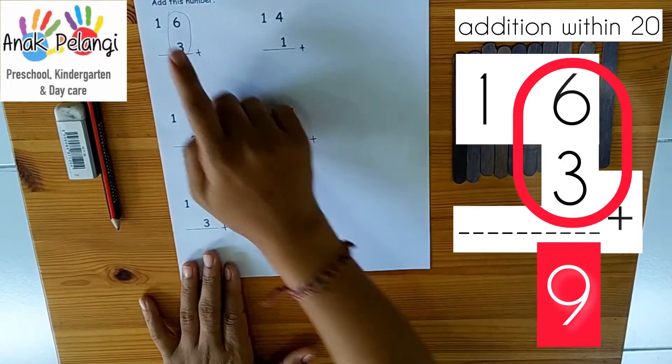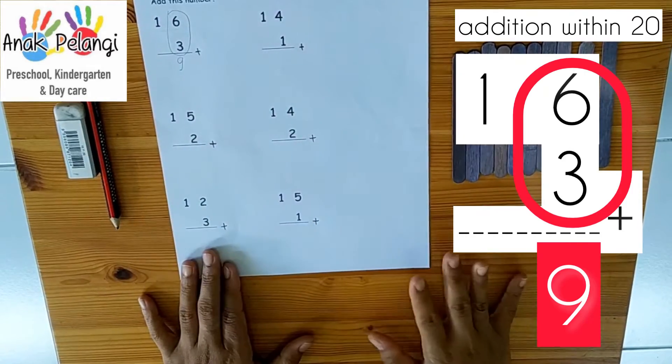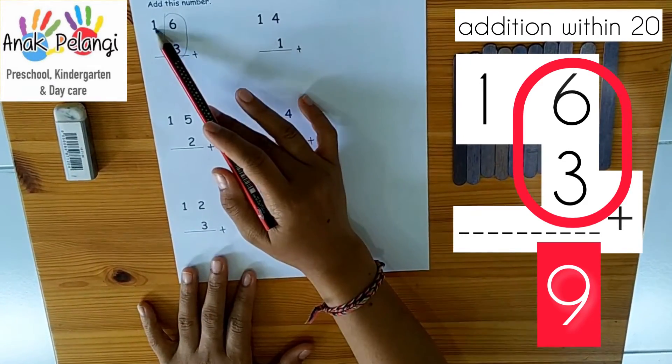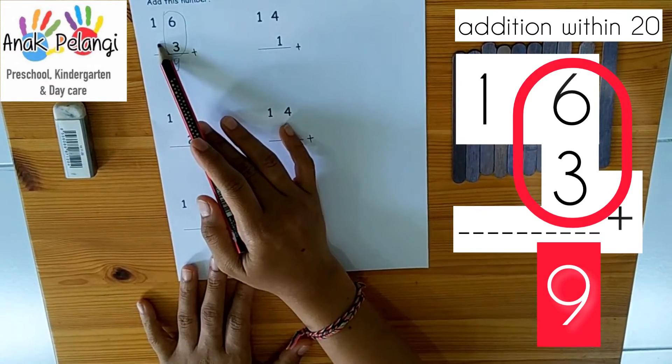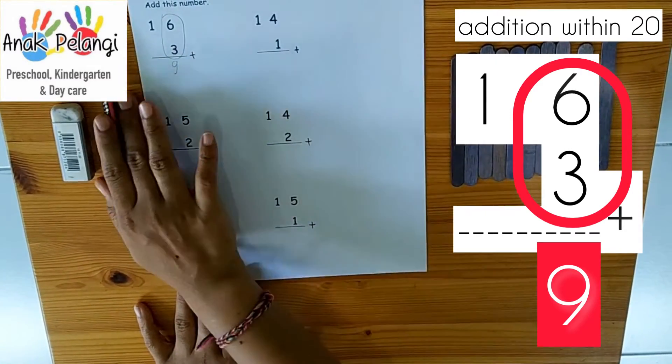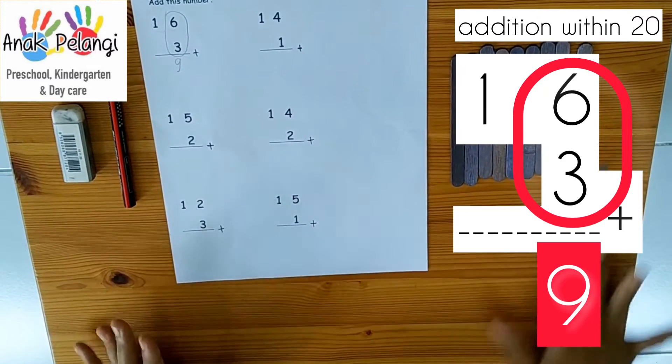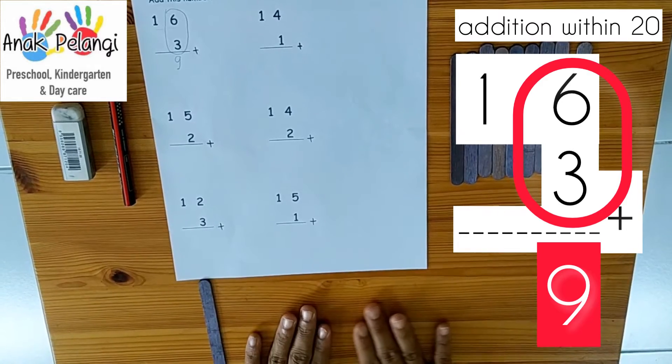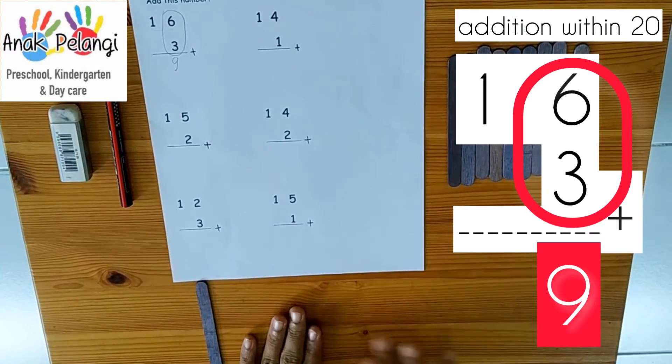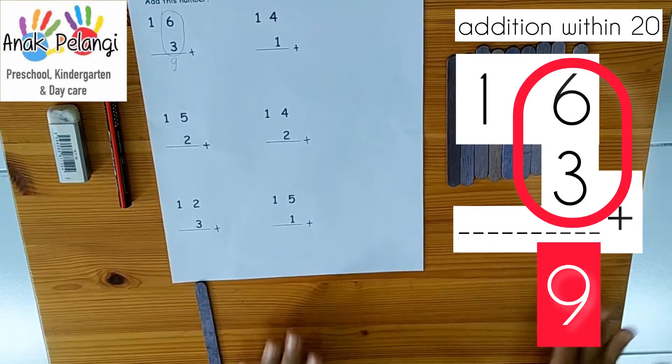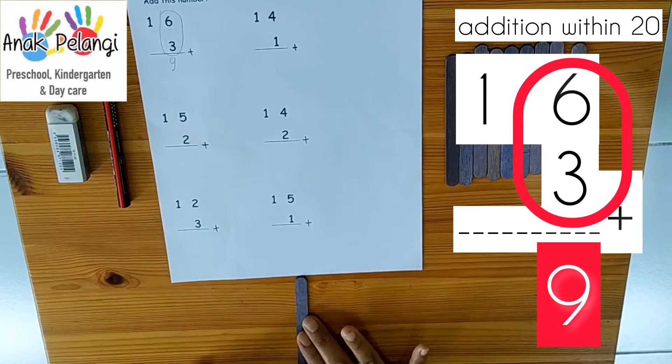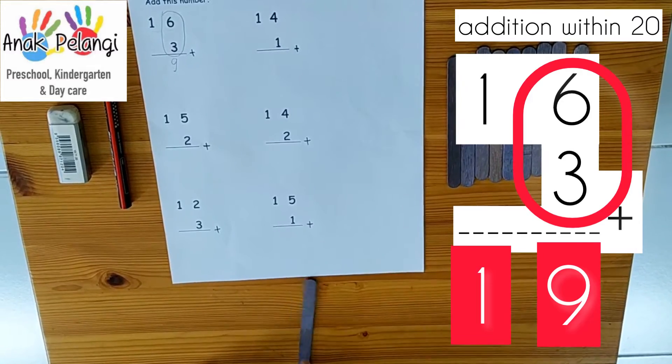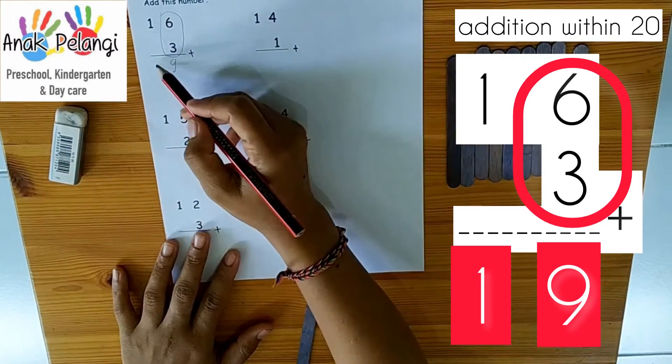Next, 1 plus 0. 1 plus 0 means nothing. So 1 plus 0 is equal to 1. Write number 1.